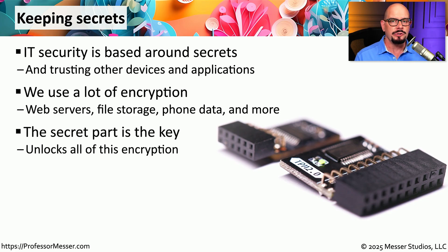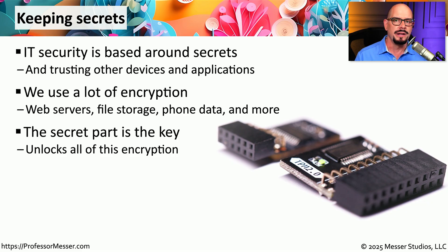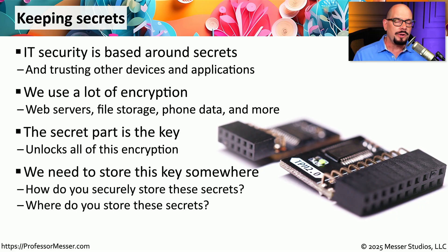The process we use for encrypting and decrypting data is usually a very well-known process, based on open and public standards that you can read to understand exactly what's happening. This is similar to doorknobs — knowing how a lock works doesn't allow you access through the door. To gain access, you need the one unique thing no one else has: your key. On a computer, we don't have a physical key, but we have digital keys used during the encryption and decryption process.